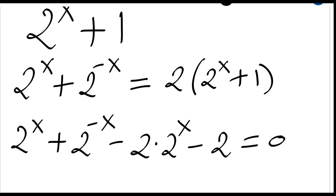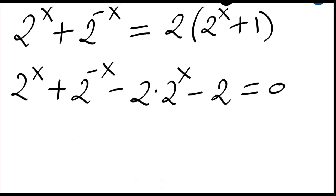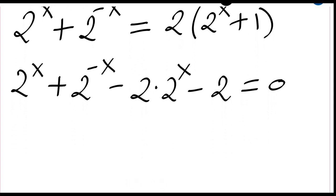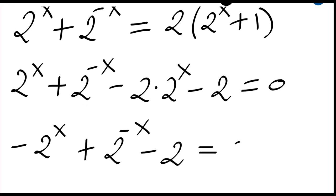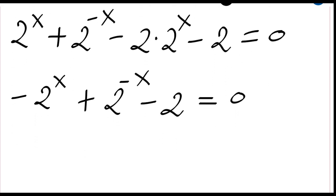Okay, this is our new equation. So this equation can still be simplified — we have this term and this term here. So we will just give minus 2 to the power x plus this term here, which is 2 to the power minus x minus two, equal to zero.